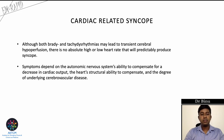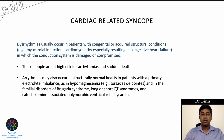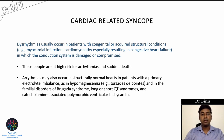Both brady and tachyarrhythmias may lead to transient cerebral hypoperfusion, but there is no absolute heart rate cutoff that can predict syncope. Symptoms depend upon the patient's autonomic nervous system's ability to compensate, the heart's structural ability, and the degree of underlying cerebrovascular disease. Dysarrhythmias usually occur in patients with congenital heart disease, acute structural conditions like myocardial infarction, cardiomyopathy, or congestive heart failure where the conduction system is damaged. Arrhythmias may also occur in structurally normal hearts with primary electrolyte imbalances such as hypomagnesemia leading to torsades de pointes, or familial disorders like Brugada syndrome, long or short QT syndrome, and catecholaminergic polymorphic ventricular tachycardia.